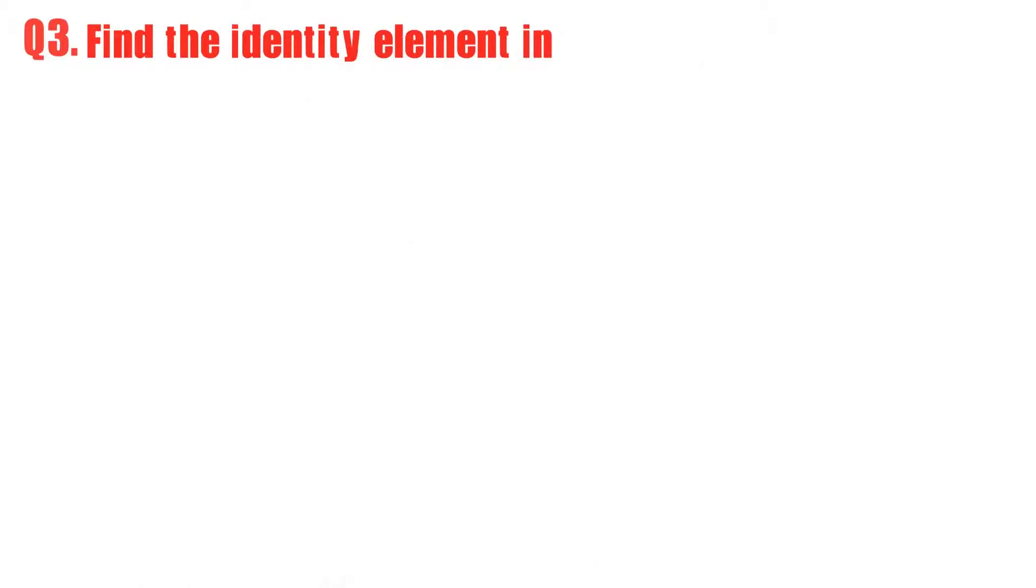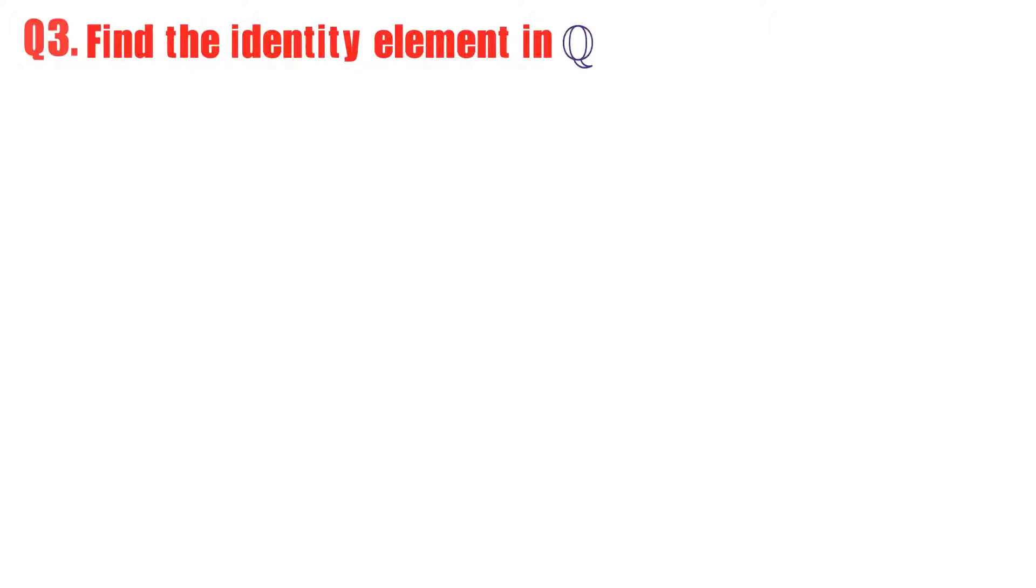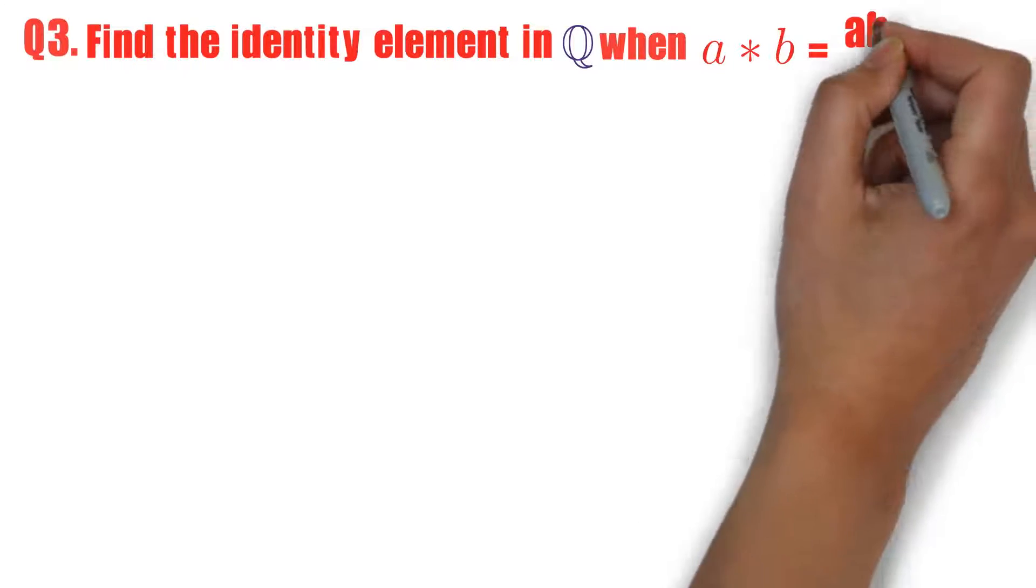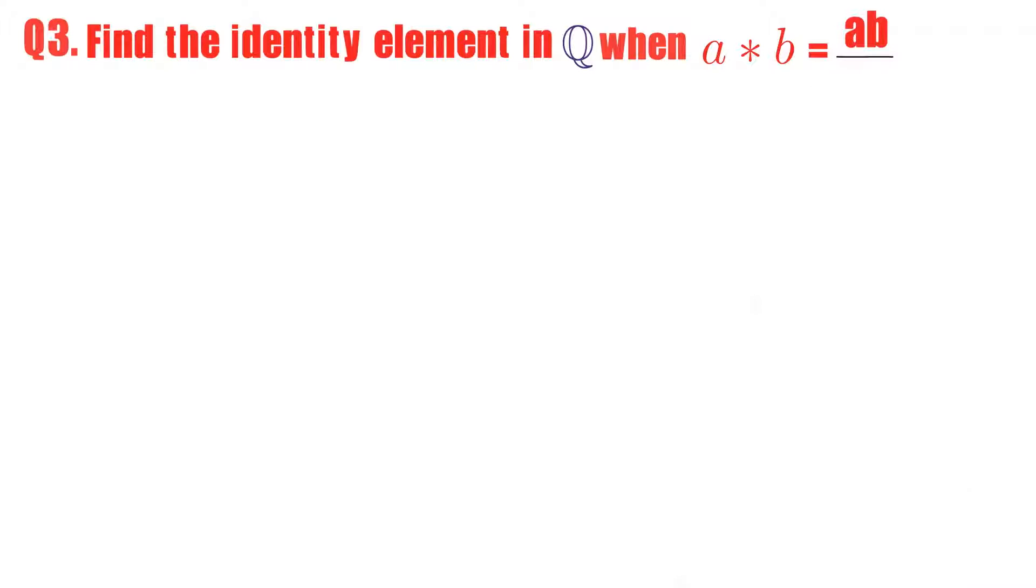Find the identity element in set of rational numbers when a star b is defined as ab divided by 4.